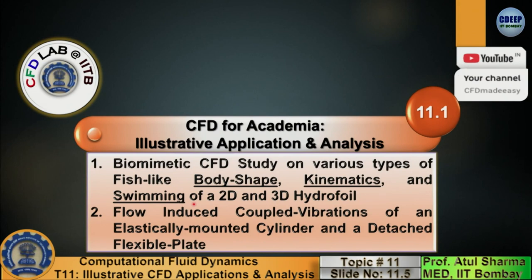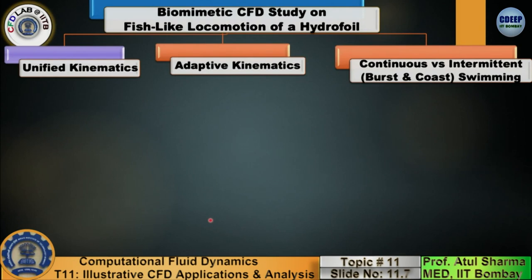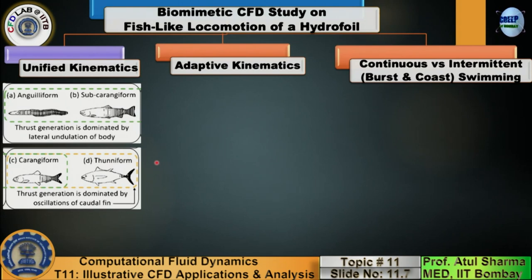Let me start with illustrative CFD application analysis for academia. The first problem is a biomimetic CFD study on various types of fish body shapes, kinematics, and swimming. This study was done by two PhD students in our lab and the code was developed from scratch, involving both computational fluid dynamics and computational structural dynamics. Fishes are of various types — thinner and thicker. Broadly, one type is called BCF fish — body caudal fin fish — which includes four classes: Angliform, Sub-Karangiform, Karangiform, and Thuniform.